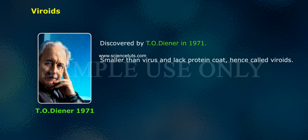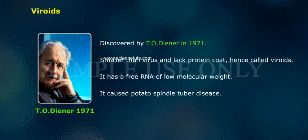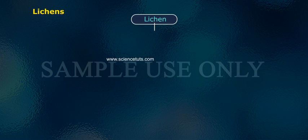Viroids were discovered by T.O. Diener in 1971. They are smaller than viruses and lack a protein coat, hence called viroids. A viroid has a free RNA of low molecular weight. It causes potato spindle tuber disease.